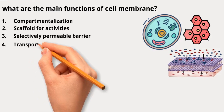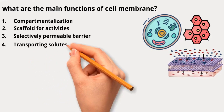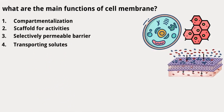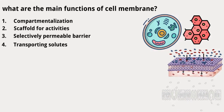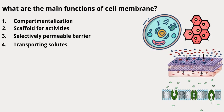Fourth, transporting solutes: membranes contain machinery for moving substances from one side of the membrane to the other. This helps cells accumulate the materials they need, like sugars and amino acids, and establish ionic gradients, which are crucial for nerve and muscle cells.